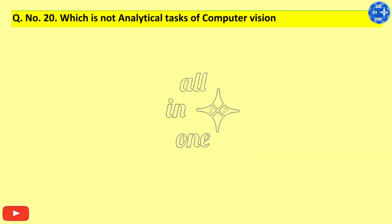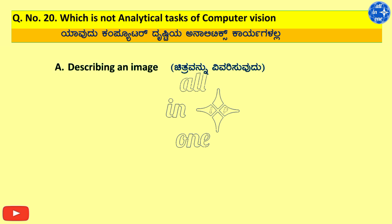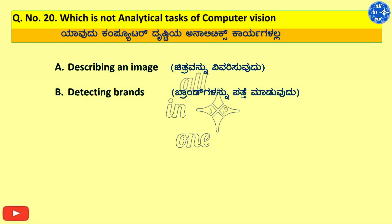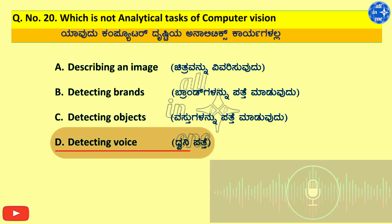Last question, number 20. Which is not an analytical task of computer vision? Options: A. Describing an image, B. Detecting brands, C. Detecting objects, D. Detecting voice. Right answer is D. Detecting voice.